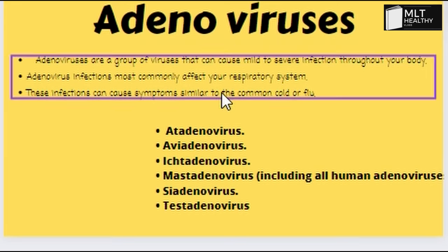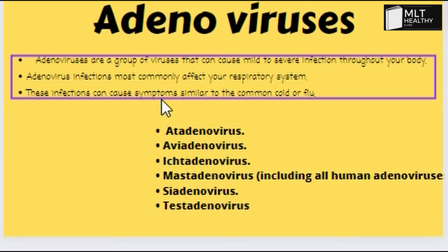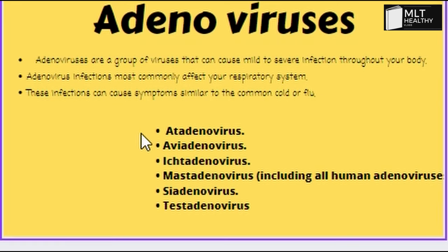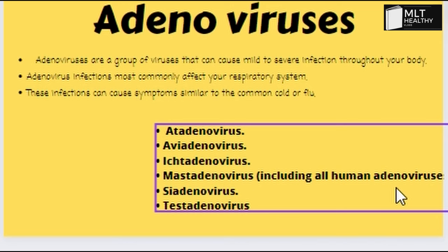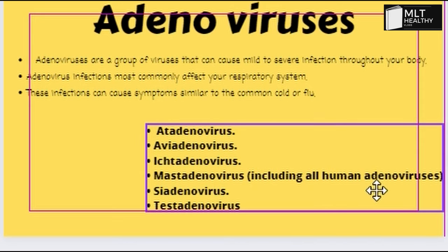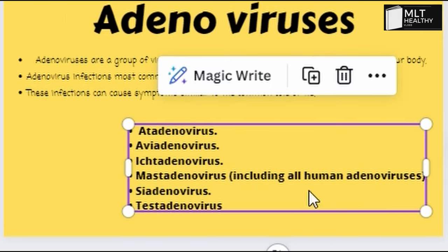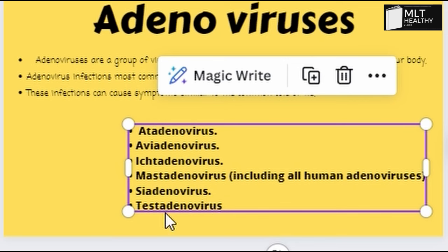Adenoviruses are different. Throughout the body, there are infections mainly in the respiratory system. This causes common cold and flu. Types include human adenovirus, C adenovirus, and other subtypes.